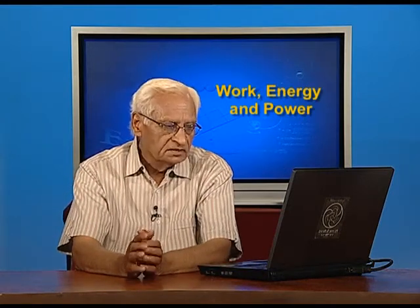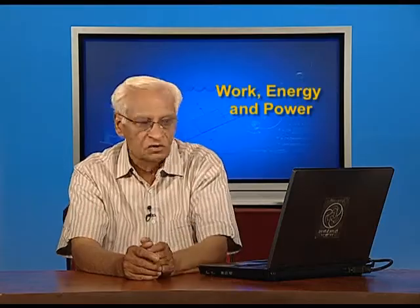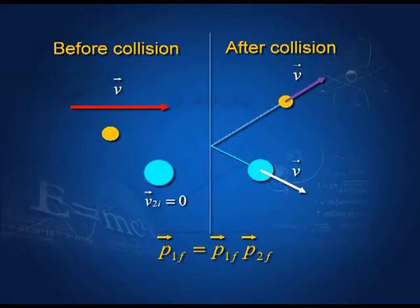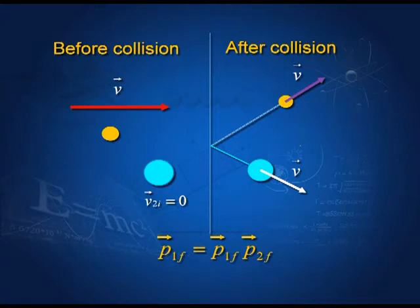As before, we assume the target particle is at rest. Before collision, the incident particle (yellow ball) is coming with velocity v₁ᵢ; the target velocity v₂ᵢ = 0. After collision, the yellow particle moves in one direction and the blue particle in another. The momentum is conserved: total momentum before collision is p₁ᵢ (since the second particle had zero momentum), and after collision it becomes p₁f + p₂f — the momentum of the single particle is shared by two particles.